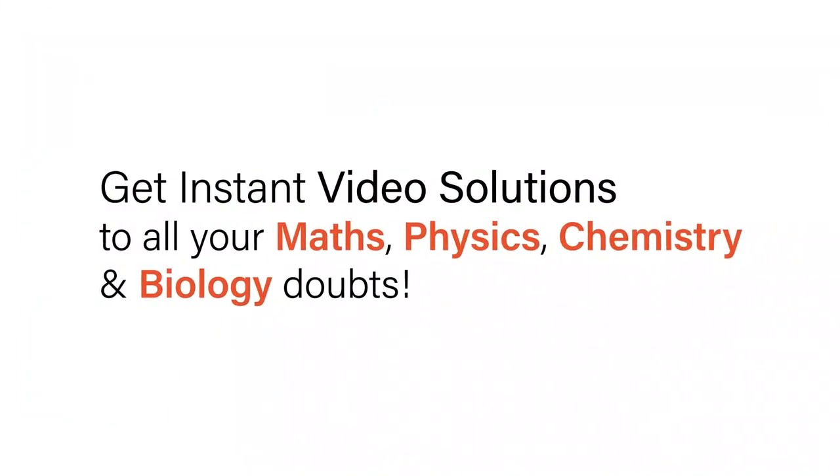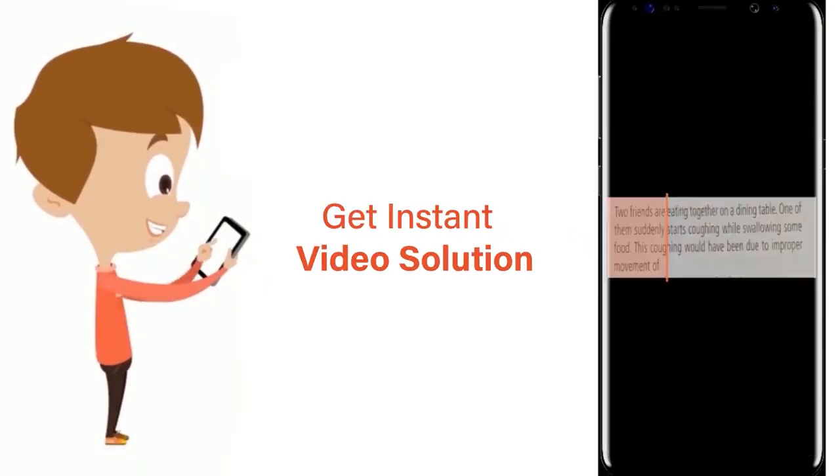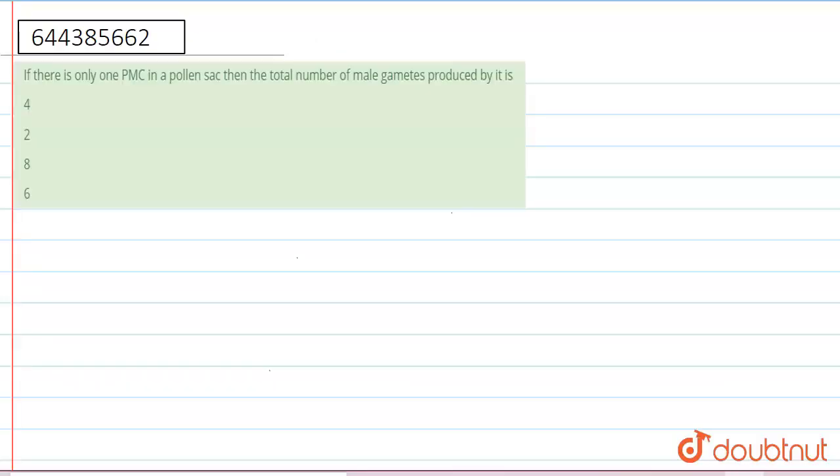With Doubtnet, get instant video solutions to all your math, physics, chemistry, and biology doubts. Just click the image of the question, crop the question, and get an instant video solution. Download the Doubtnet app today. Hello, the question says if there is only one PMC in pollen sac, then the total number of male gametes produced by it.